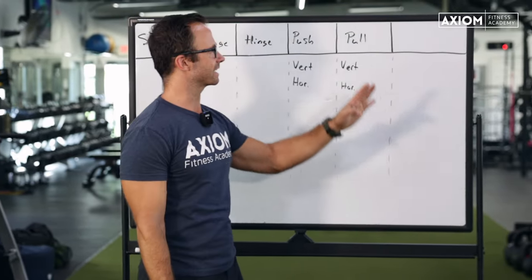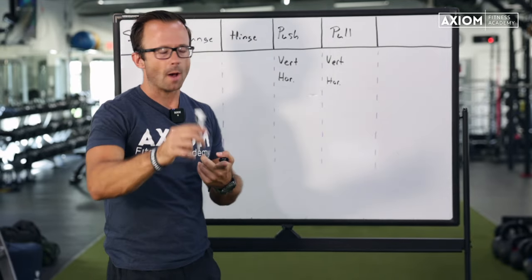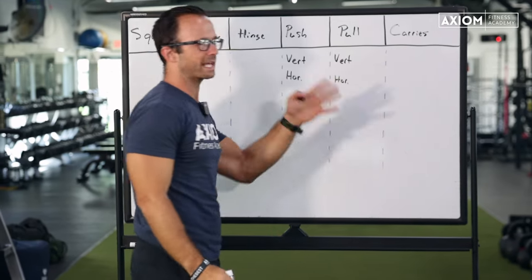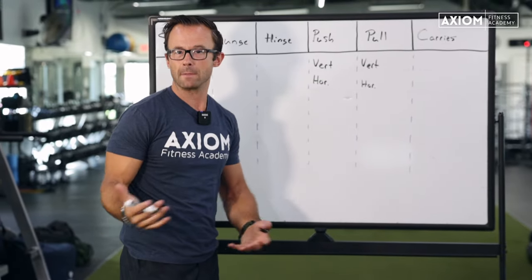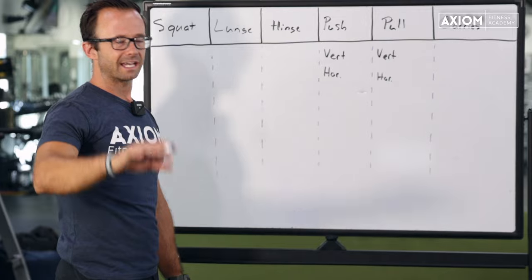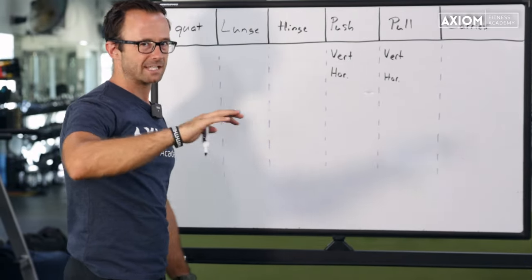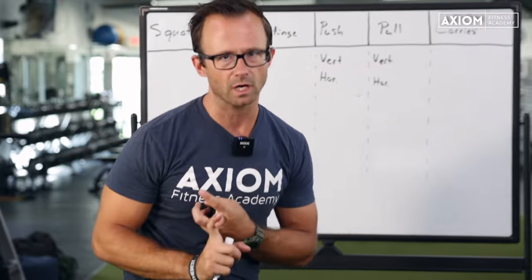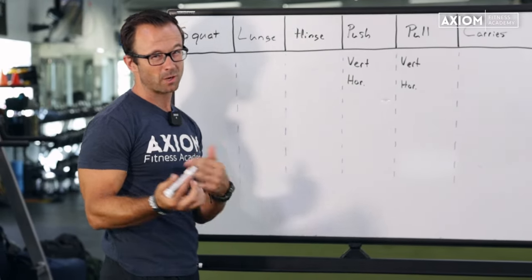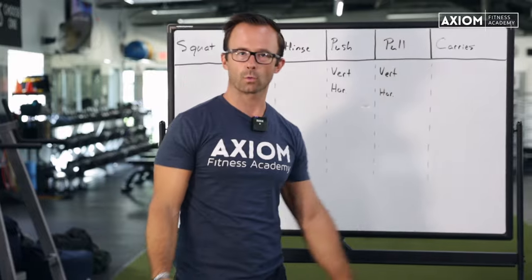So squat, lunge, hinge, push, pull — there are a lot of other things you could consider as additional categories: locomotion exercises, rotation exercises, carries. This is truthfully meant to be a practice for you. Maybe even after this video you sit down and create an Excel spreadsheet and start to list all the exercises that you know. One of the major benefits is it's beneficial to get all the stuff out of your head and onto a workable platform, because as you sit down with any client — whether they're a fat loss client, whether they've just started working out, whether they're more advanced — somewhere in their week, probably twice a week, they should be doing each one of these movement categories.